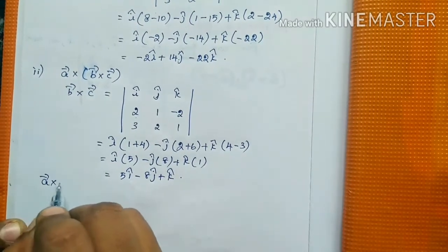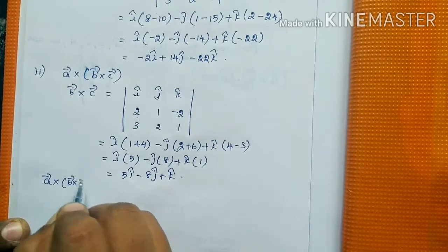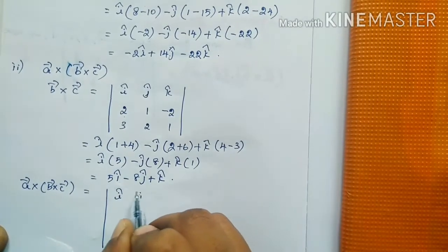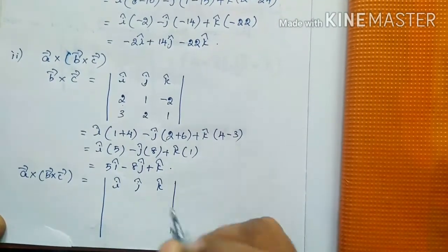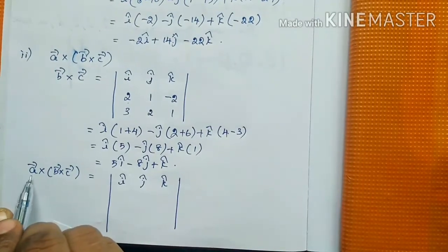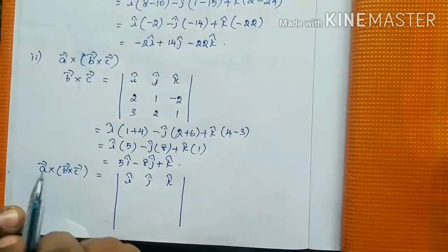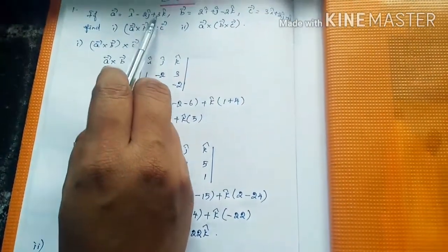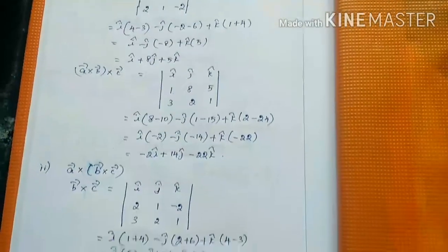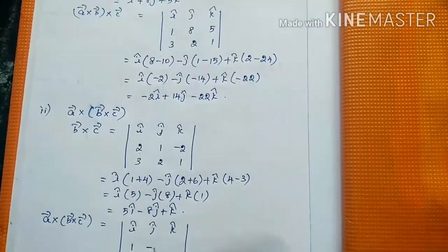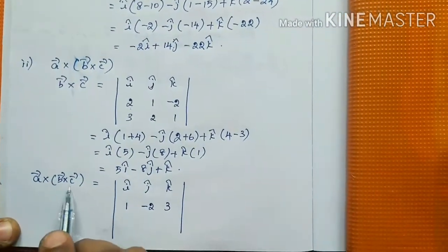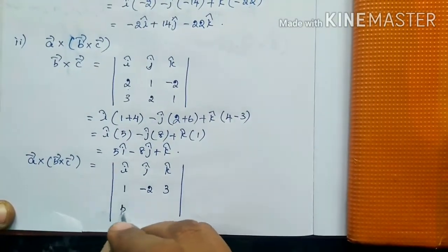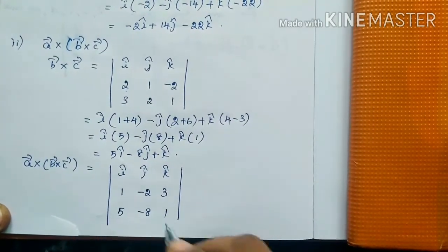A×(B×C) equals, again in determinant form: first row î, ĵ, k̂. For A vector, the components are 1, -2, 3. For B×C, the components are 5, -8, 1.